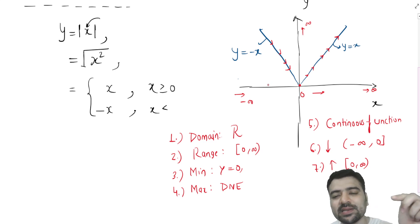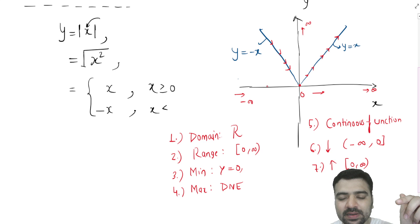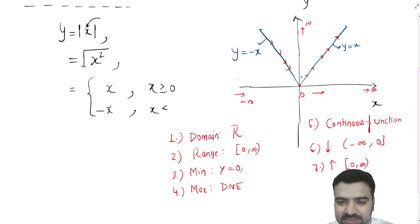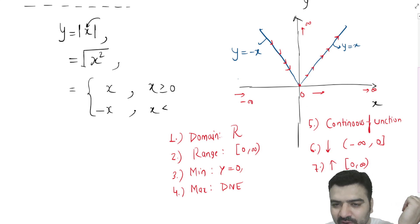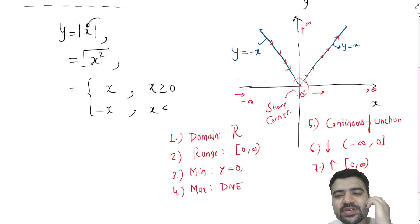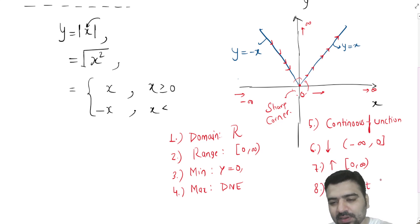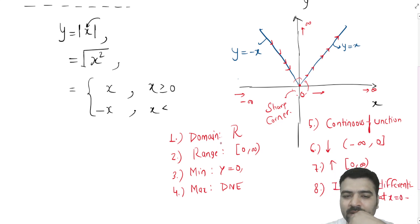Differentiation is nothing but the slope of the tangent at a point. Everywhere on the graph, there is a unique tangent that is defined. At 45 degrees, slope is 1; at 135 degrees, slope is -1. So when x > 0, slope is 1; when x < 0, slope is -1. But at x = 0, there are two tangents and a sharp corner, so the function is not differentiable at x = 0.